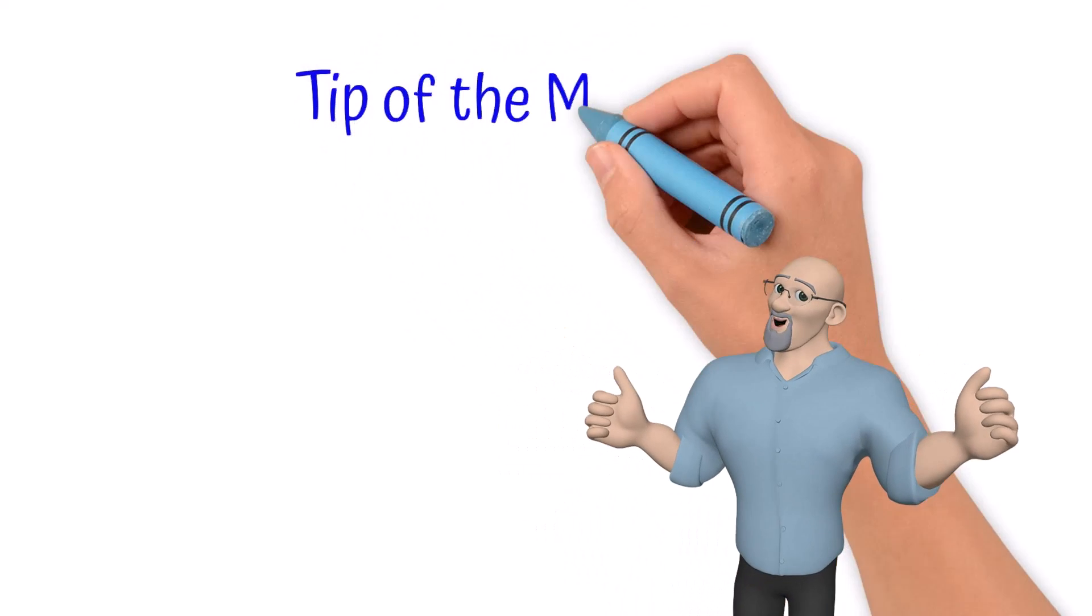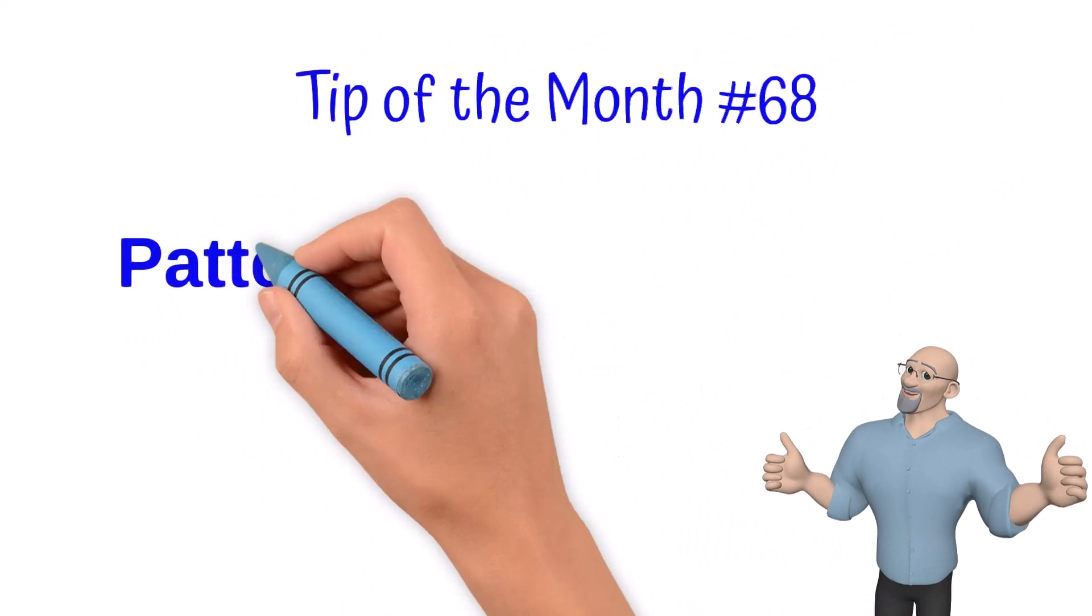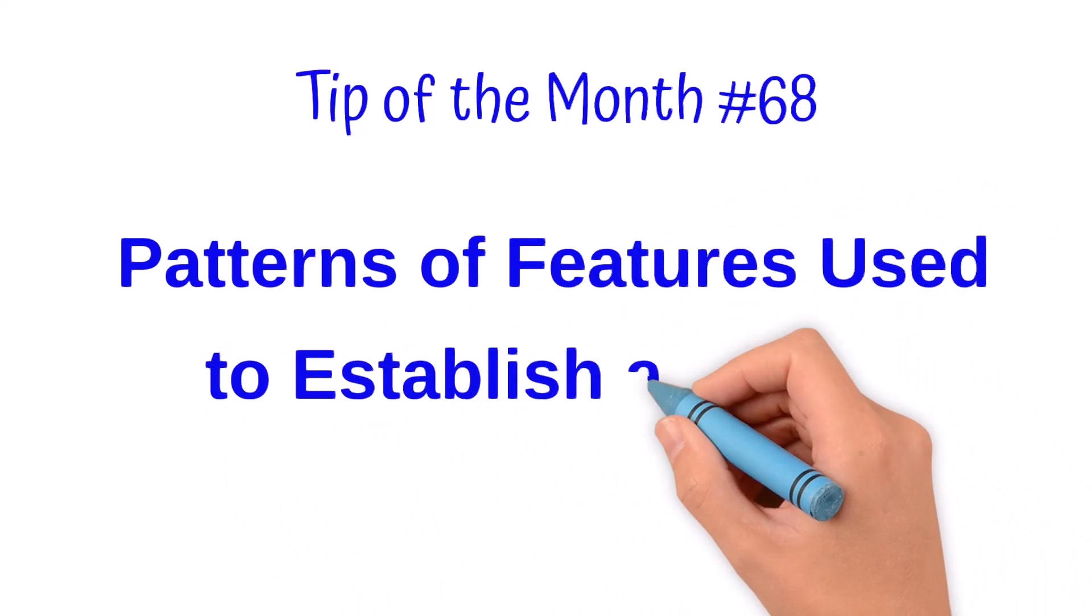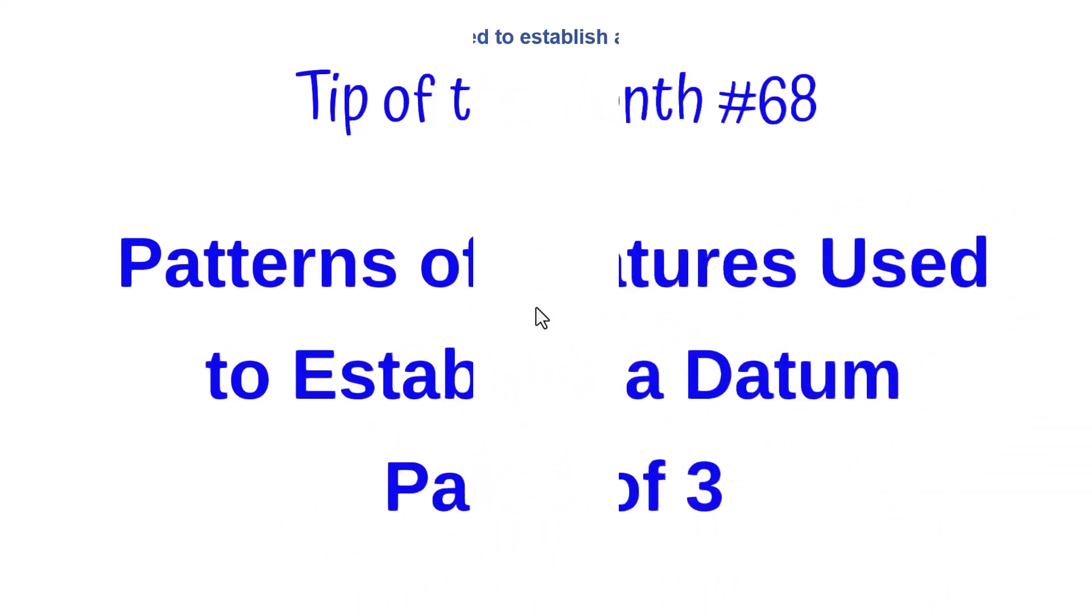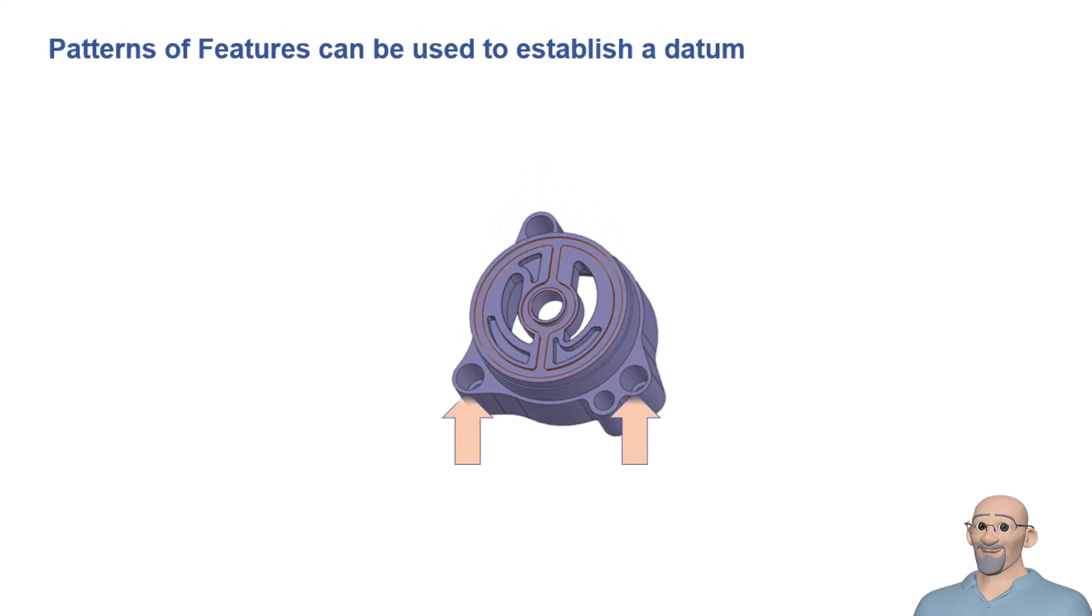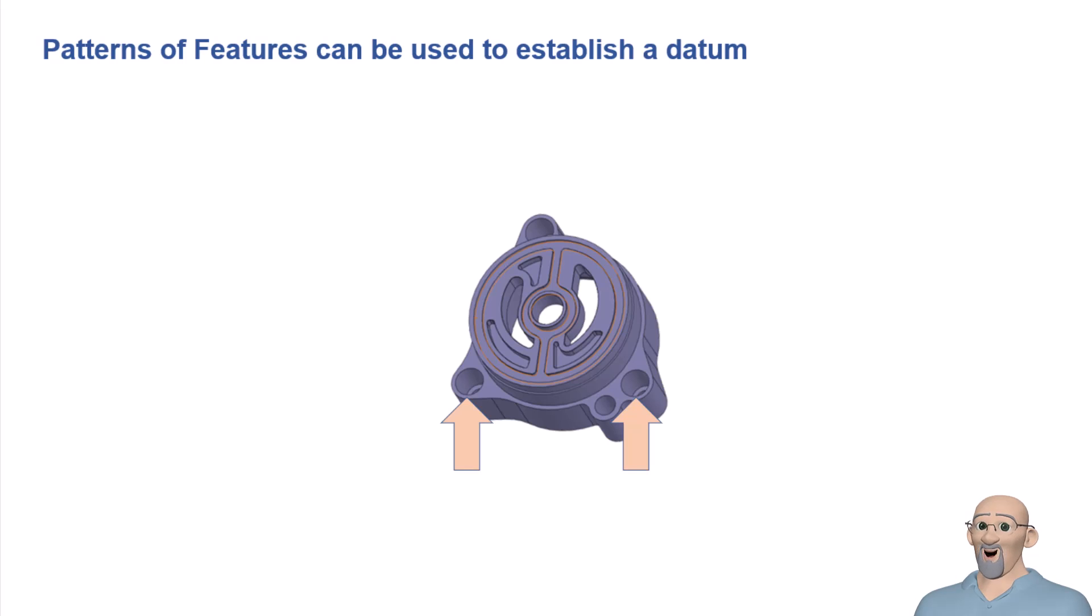Patterns of Features Used to Establish a Datum, part two of three. As we discussed in part one of this tip, the Y14.5 standard tells us we can use a pattern of features to establish a datum. For this tip, we will look at a pattern made by two parallel holes.